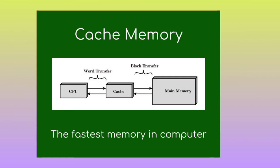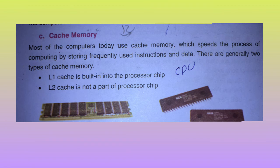Cache memory access time is faster than RAM. There are two types of cache memory: L1 cache, which is built into the processor chip, and L2 cache, which is not a part of the processor chip. L1 cache is part of the CPU itself, while L2 cache is separate from the chip.